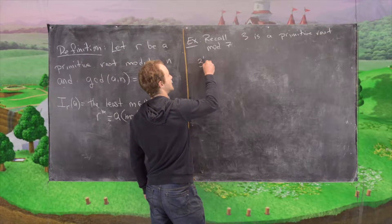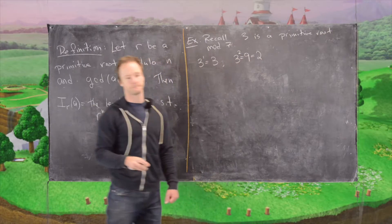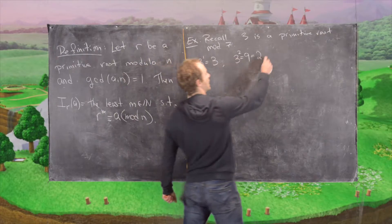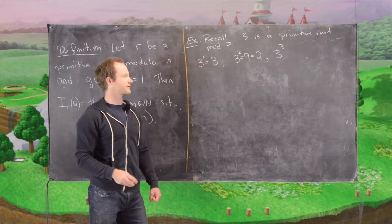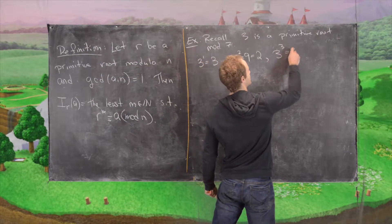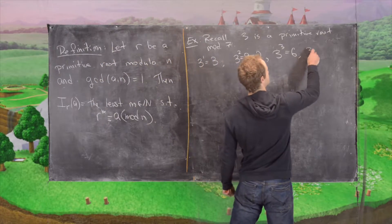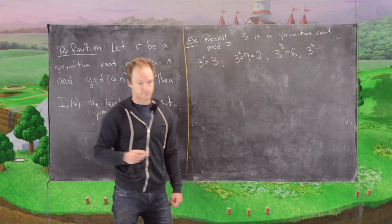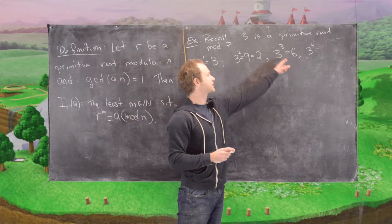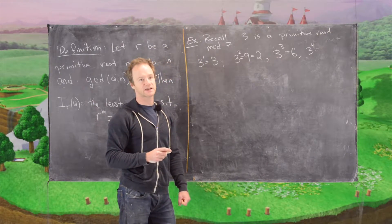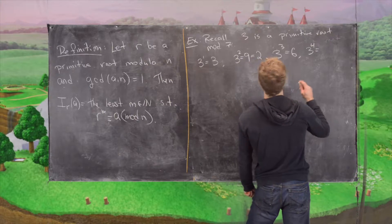So we have 3 to the 1 is obviously 3. 3 squared is 9 which is 2. And then 3 cubed will be 3 times 3 squared so that's 3 times 2 which is 6. Notice 6 is the same thing as negative 1. So notice 3 to the 4 is equal to 3 times 3 cubed. So 3 times 6 is 18 and 18 is 4 more than 14. So this will be 4.